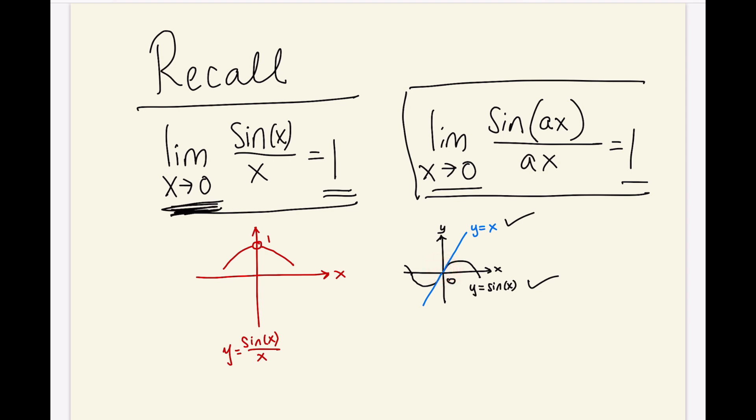So it makes sense that their quotient is approaching 1. This fact holds for any function of the form sin(ax) divided by ax, where a is just some constant like 3 or 4. So we want to remember these two facts because they will help us to calculate limits of this form.